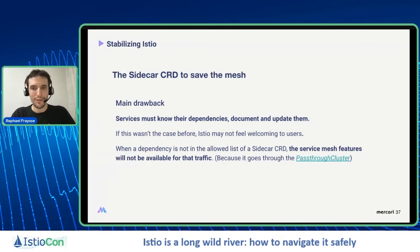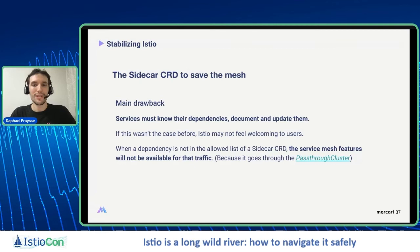There is a drawback to this approach: you need your services to know their dependencies, document and update them. If that wasn't the case before, users may feel that Istio asks too much from them. When a dependency is not in the allowed list of the sidecar CRD, the service mesh features will not be available for that traffic, which caused a lot of different issues because of the pass-through cluster.